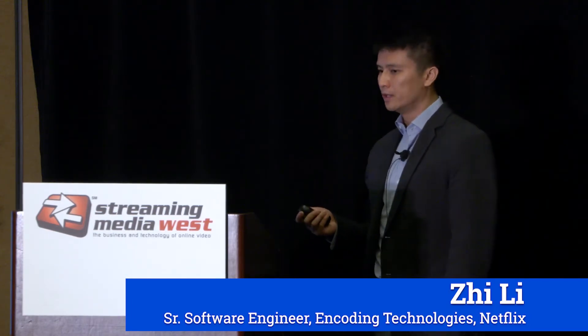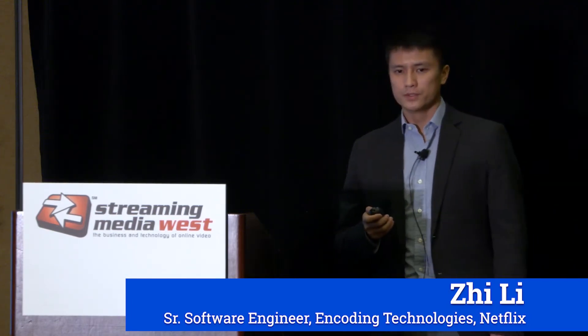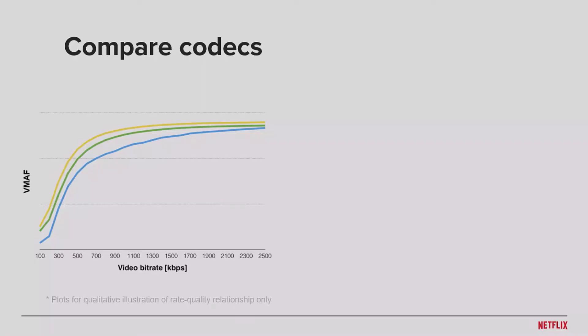For codec depth comparison, here's what we do. Say, if you have three different codecs and we want to evaluate their performance, what we start with is the content. We're going to be selecting clips, each one about several seconds or even one minute, and we're going to collect thousands of them.